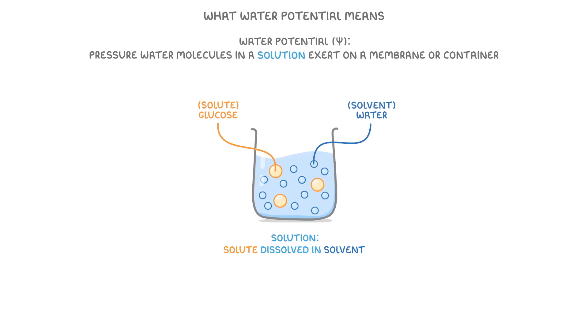Importantly though, these solute and solvent particles are constantly moving around, which exerts pressure on their container. In our example here, the container is a beaker, but in our cells, the container would be the cell membrane. And importantly, it's specifically the pressure exerted by water molecules in the solution we refer to as water potential. And because it's a type of pressure, it's measured in kilopascals, or kPa for short.